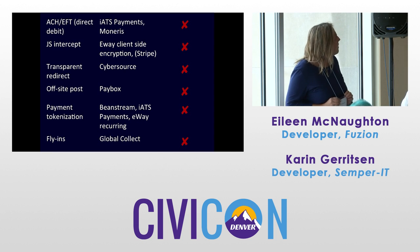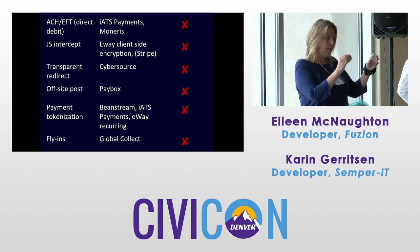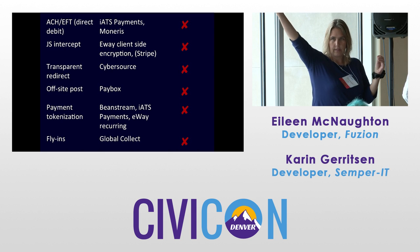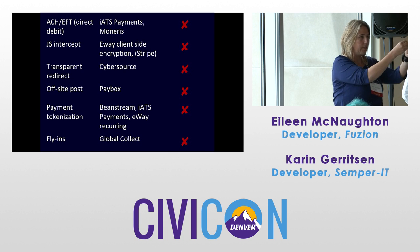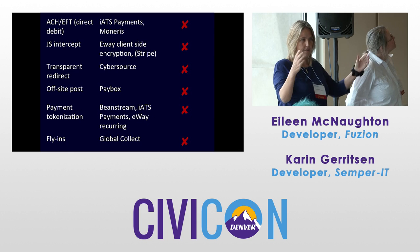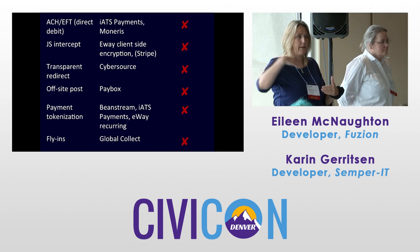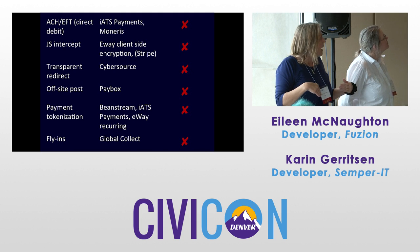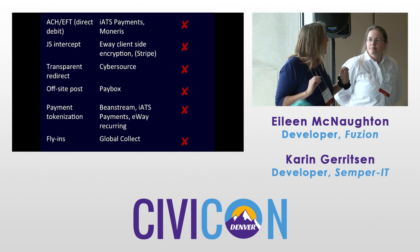JS intercept, or client-side encryption: a JS script is loaded onto the page. When you click submit, the script contacts their site and gets a token in exchange, so what gets submitted to your site has the credit card field swapped out for a token — the credit card number never enters your PHP process. It does break validation because it's no longer a 16-character string, which is why it gets a cross.